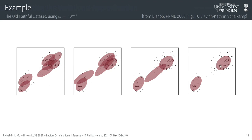Here are a few snapshots of this algorithm running on the Old Faithful dataset. Initialized with seven components, after a few steps the algorithm notices it's better — in terms of raising the ELBO and lowering the KL divergence — to assign marginal probability zero to some clusters. Those clusters drop out, and in the end the algorithm finds a clustering with only two components, which is intuitive because that's what we see in the data.